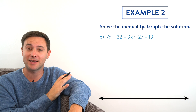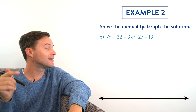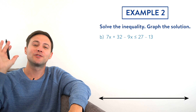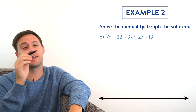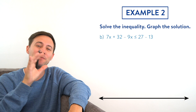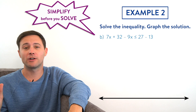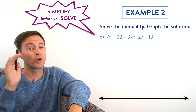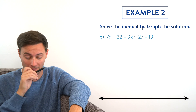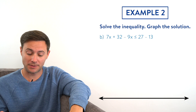We divided both sides by a negative number, so we have to switch: instead of less than it becomes greater than, and 30 divided by negative 5 is negative 6. Now to get x alone we subtract 9 from both sides, and x is greater than negative 15. Let's graph: at negative 15 we put an open circle with an arrow to the right.